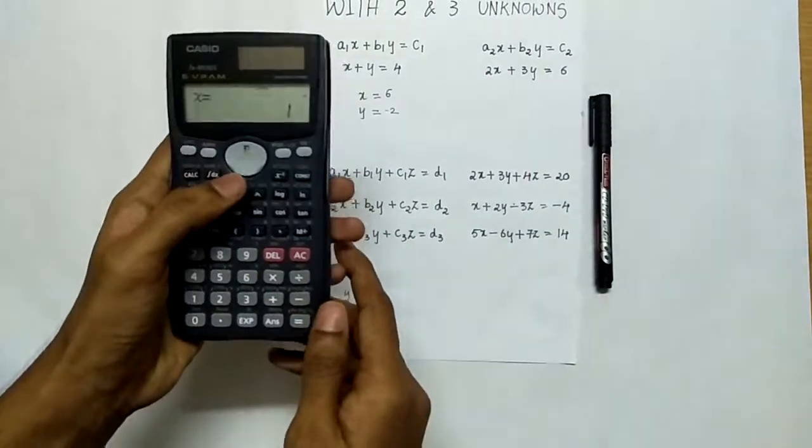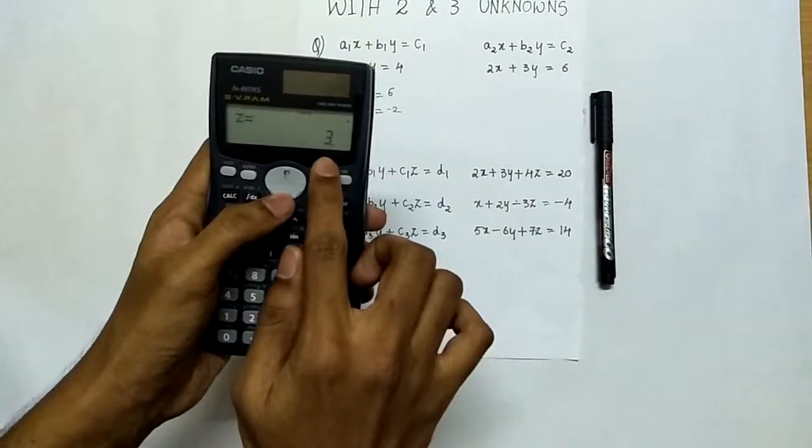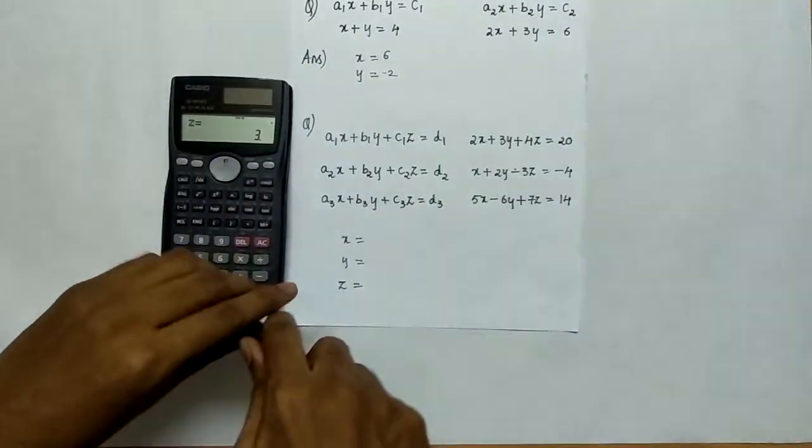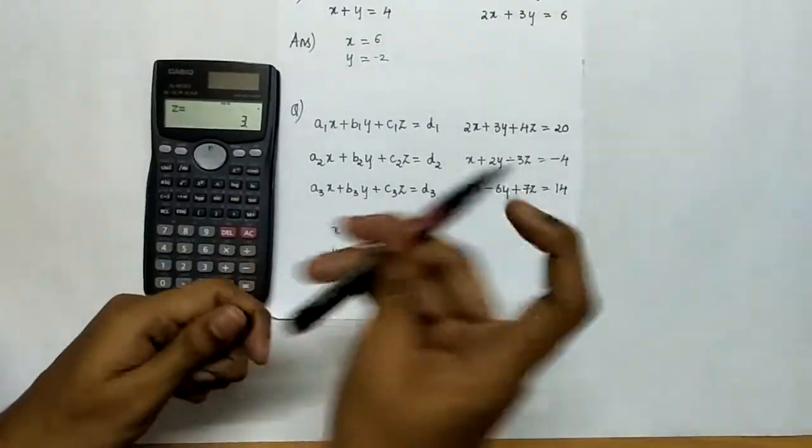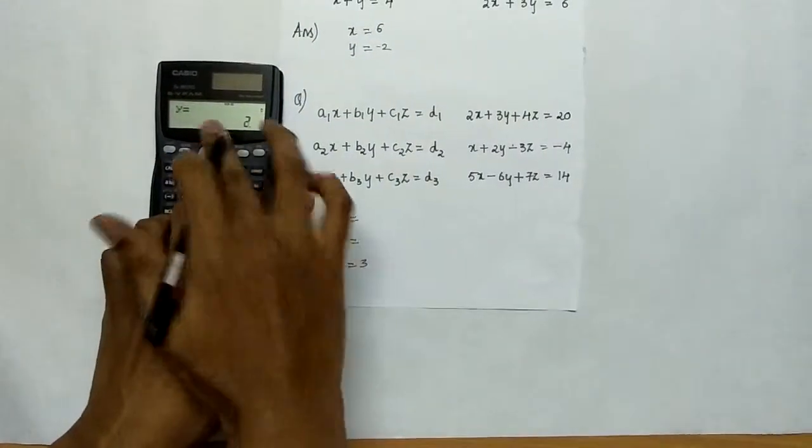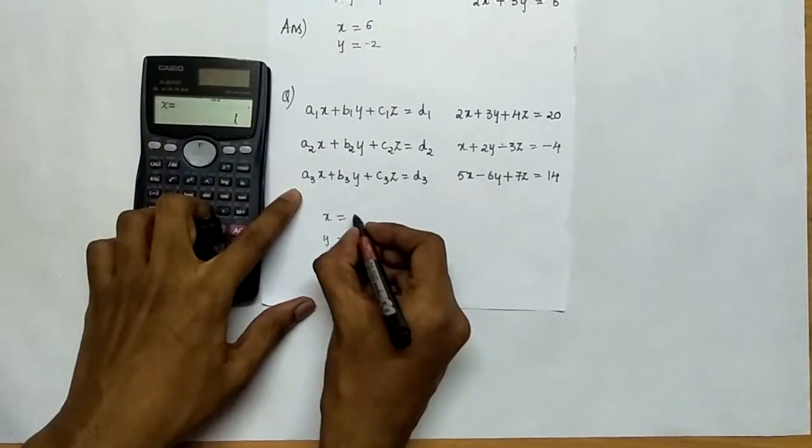So now we got the roots x as 1, y as 2, z as 3. Let us note these values: z is equal to 3, y is equal to 2 and x is equal to 1.